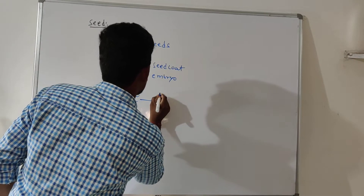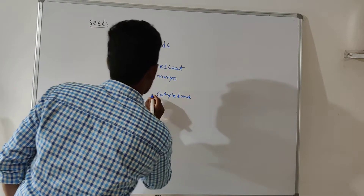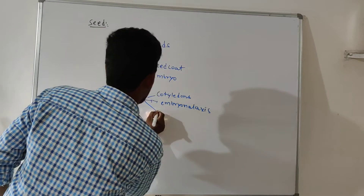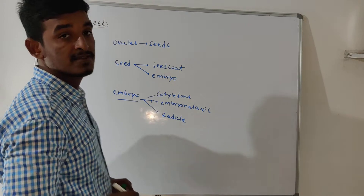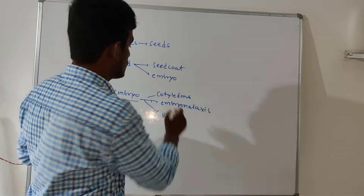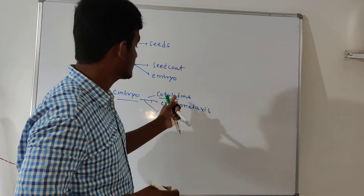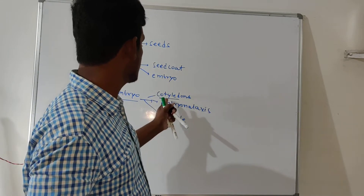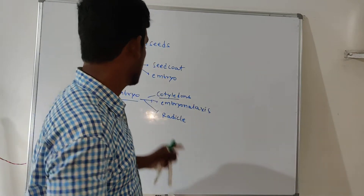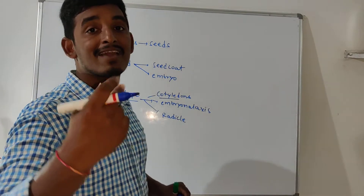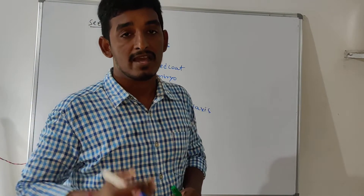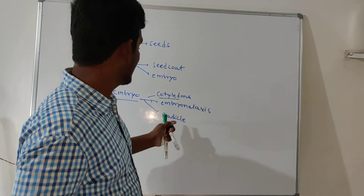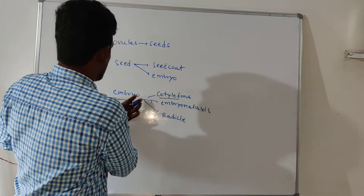The embryo has mainly three parts: cotyledons, embryonal axis, and radicle. Regarding cotyledons: one cotyledon is present in monocotyledons, and two cotyledons are present in dicotyledons. The main function of cotyledons is to store food material. The embryonal axis has two parts: above the axis is the plumule, and below is the radicle. The plumule gives the shoot system, and the radicle gives the root system.